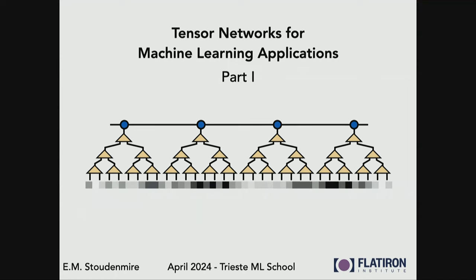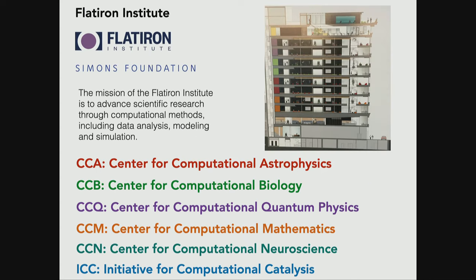I work at a place called the Flatiron Institute, located in New York City, right in Manhattan. Our focus is on computing and computational sciences — all of our centers have the word 'computational' in the name. We have centers doing astrophysics, biology, quantum physics, computational mathematics, neuroscience, and a new Initiative for Computational Catalysis, which is hiring postdocs and faculty and will focus on quantum chemistry and applications to catalysis.